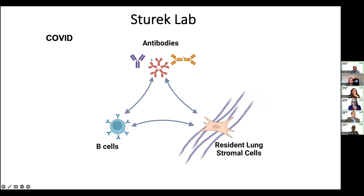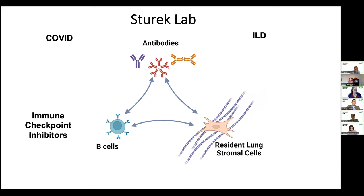We responded to the pandemic and look at things COVID-related. We look at chronic scarring lung disease called interstitial lung disease, different drugs and how they impact immune checkpoint inhibitors used in cancer, and an I-THRIVE scholar, Ava Otavilova, is a fellow in my lab who is going to look at TB. We are happy to look at anything interesting that may come with money.